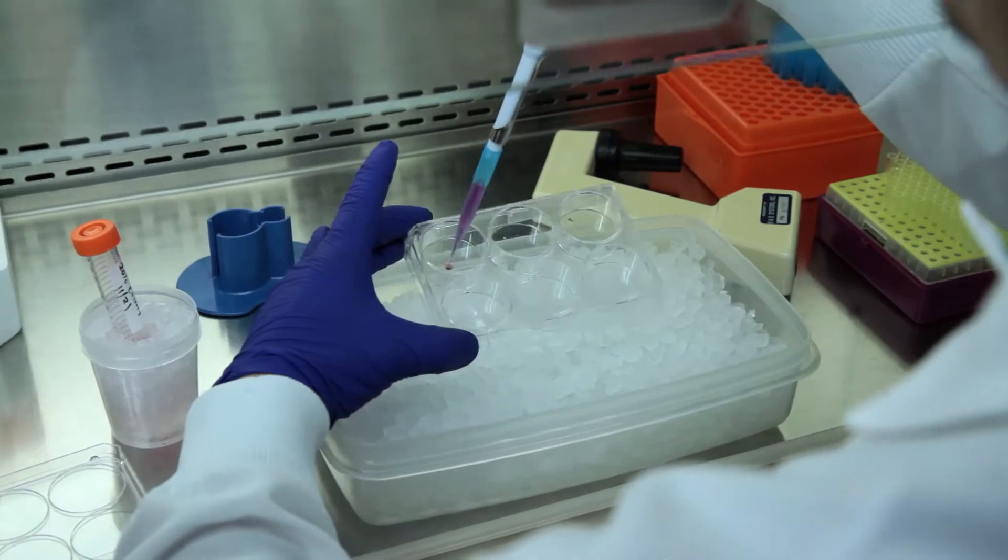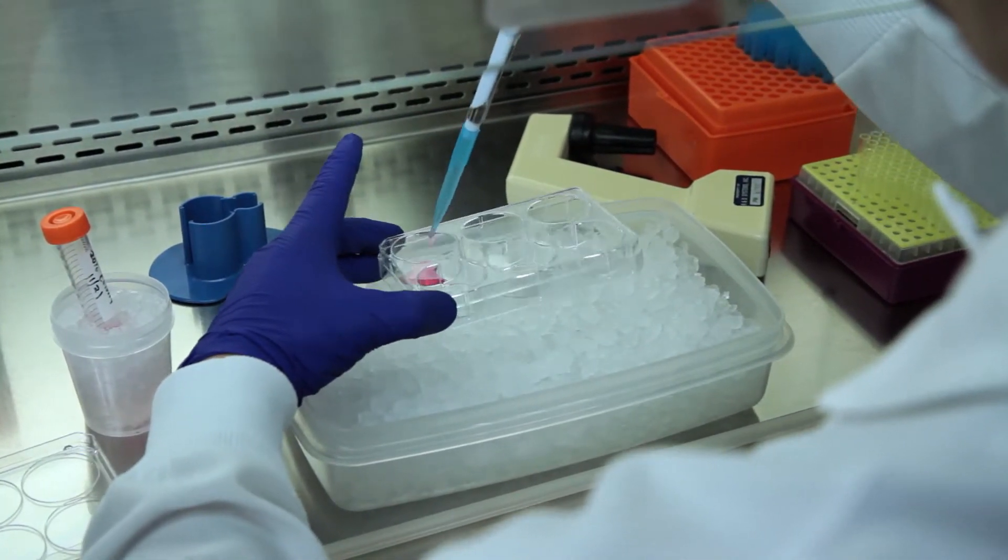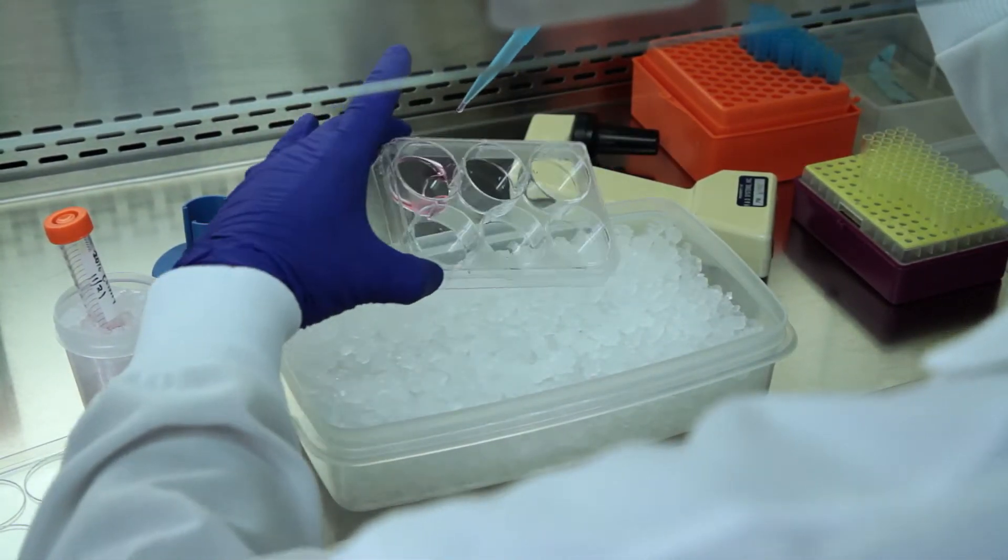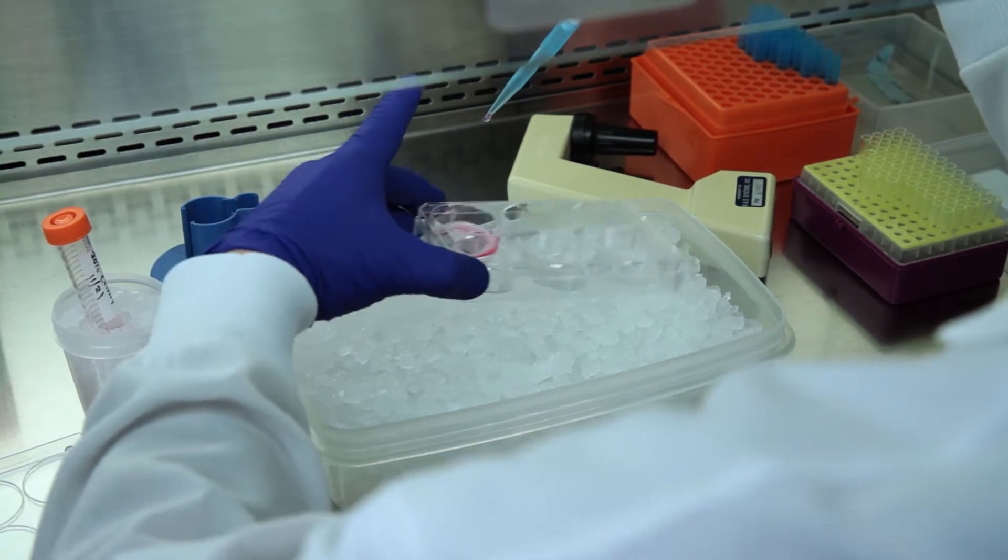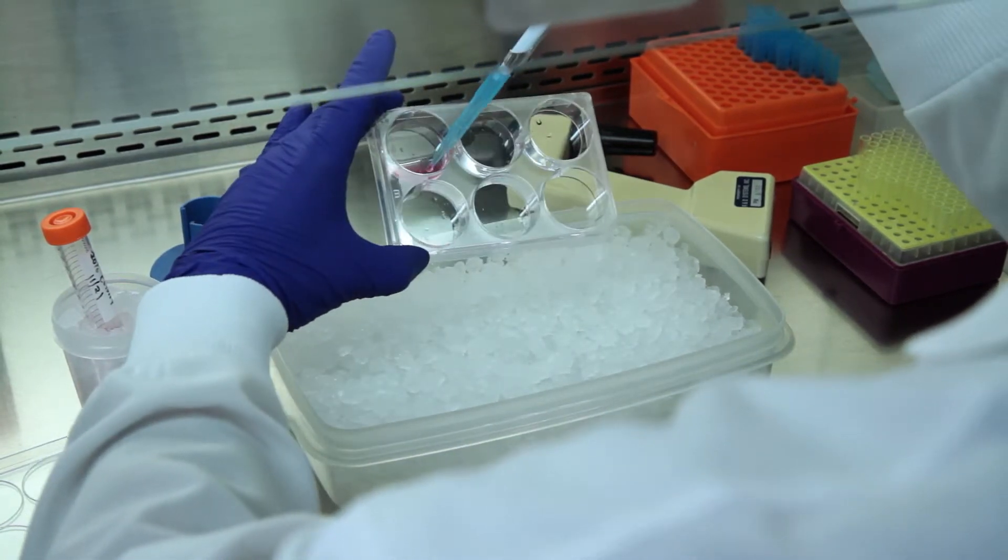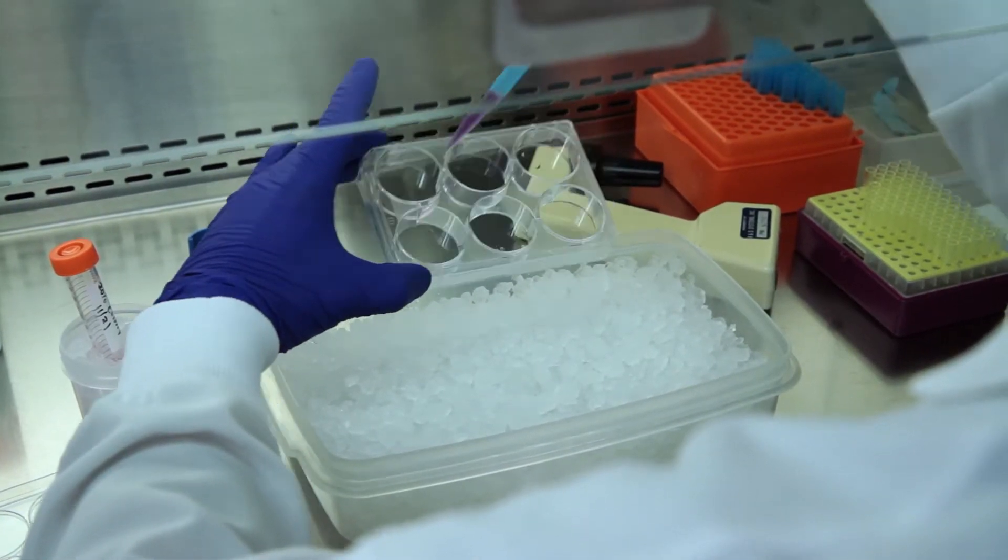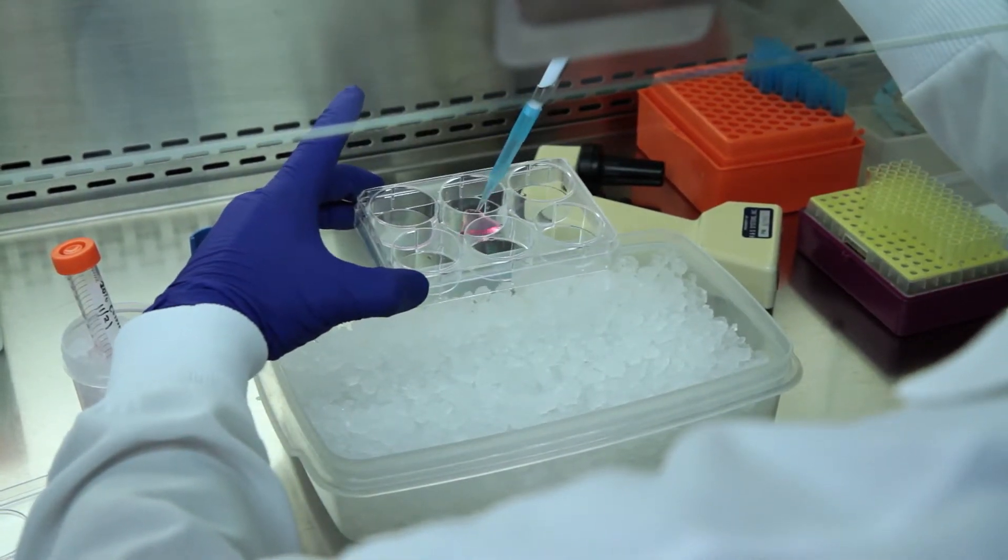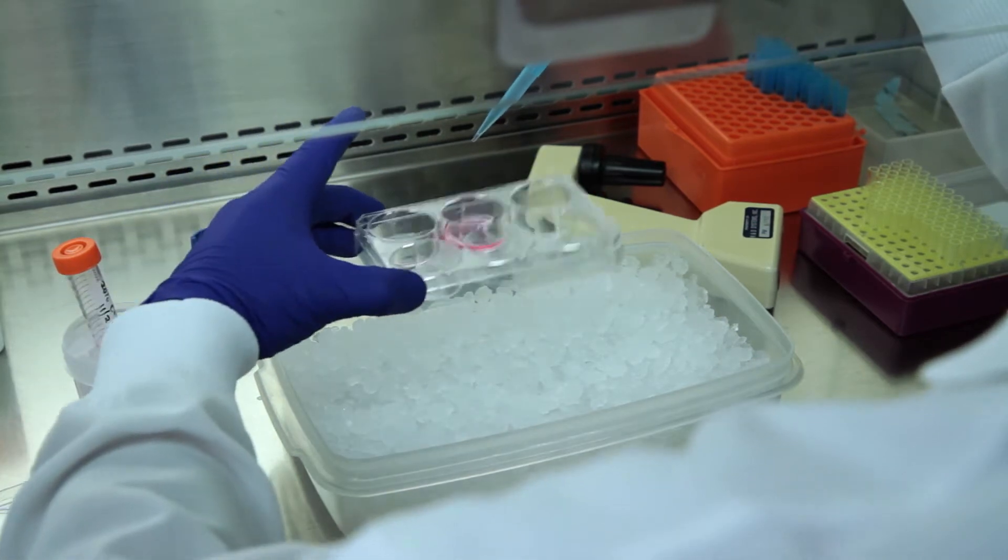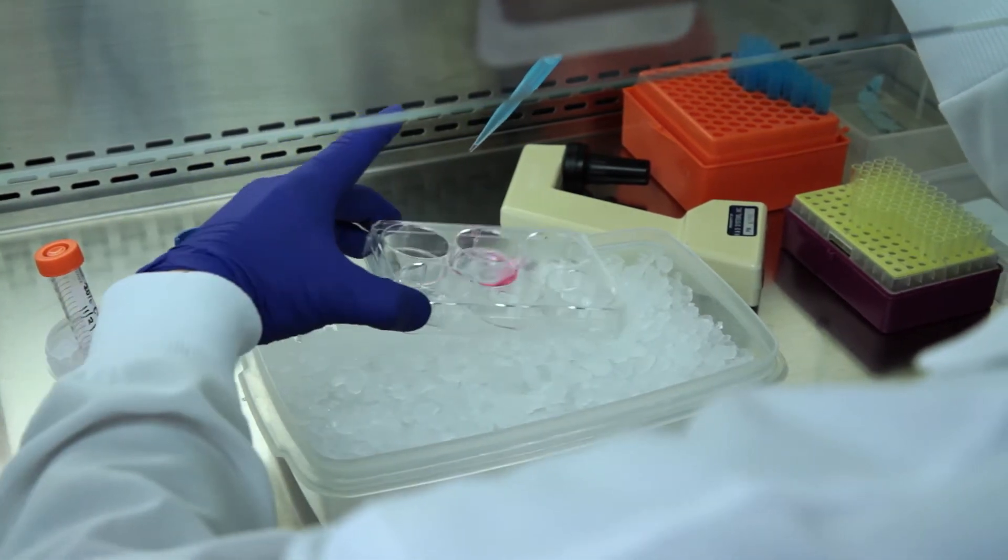To coat a six-well plate for stem cell expansion, pipet diluted Coltrex BME into the center of the well. Gently swirl the plate to evenly coat the well. Tilt the plate to collect the Coltrex BME and transfer it to the next well. Be careful to avoid introducing air bubbles during the coating and well transfer.